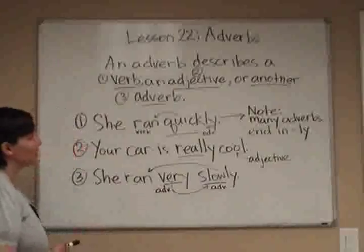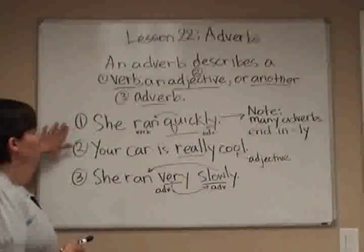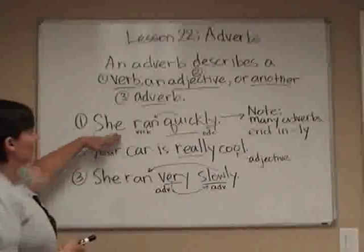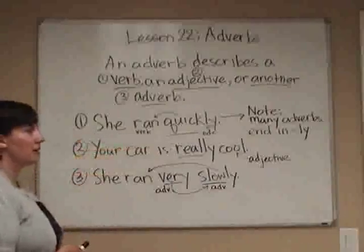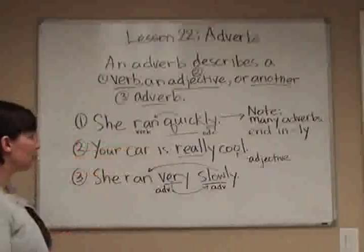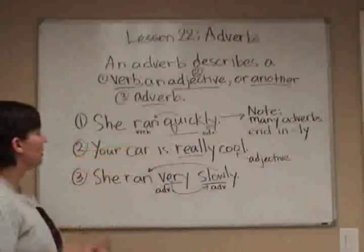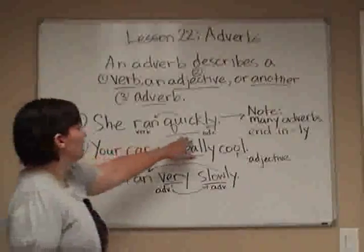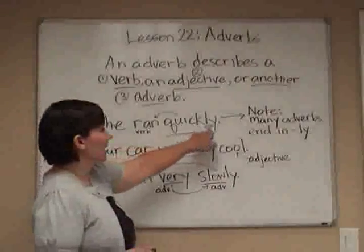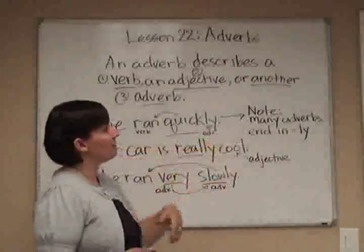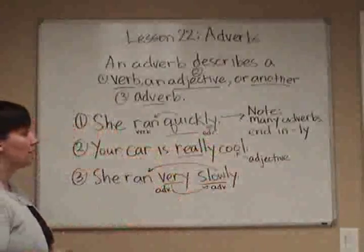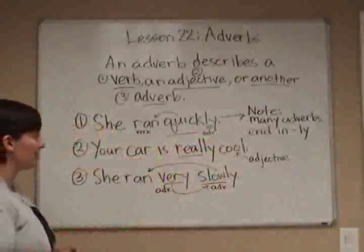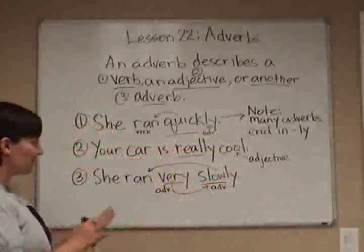Typically it's describing the verb, and you'll see, like in number one, she ran quickly. How did she run? So we're looking for the description of the verb — quickly. You see that -ly? Many of the adverbs you're going to find in your lesson are going to have the -ly, so that's a hint. That's how you can quickly find them.